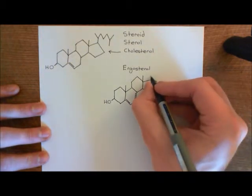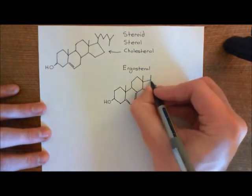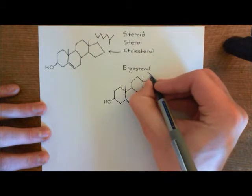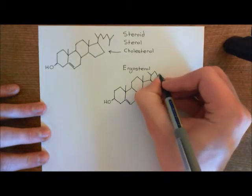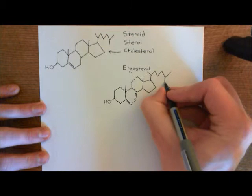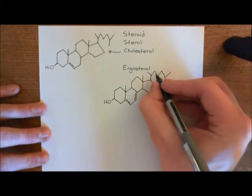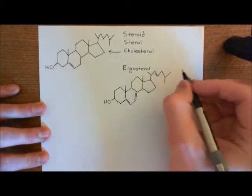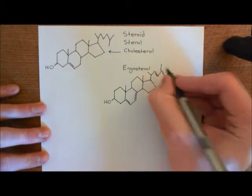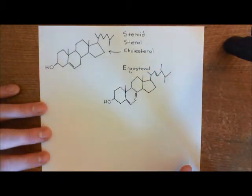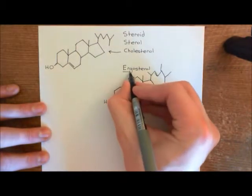We're also going to have this structure coming off up here. It's very similar to cholesterol, so I'll draw the same structure again as we have for cholesterol. Now we're just going to modify it a little bit. We're going to change this bond here to a double bond, and we're going to stick another methyl group coming off there. And that now is the structure of ergosterol.